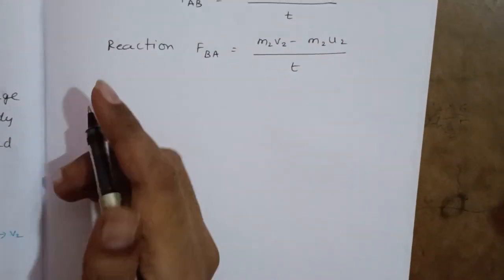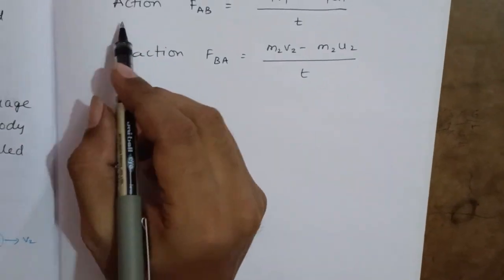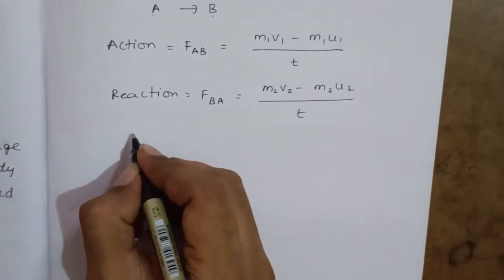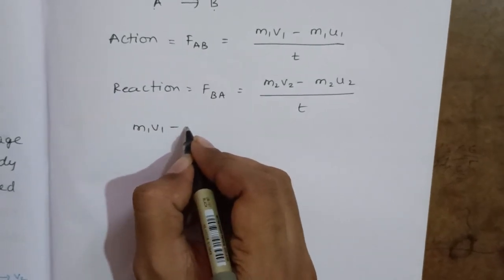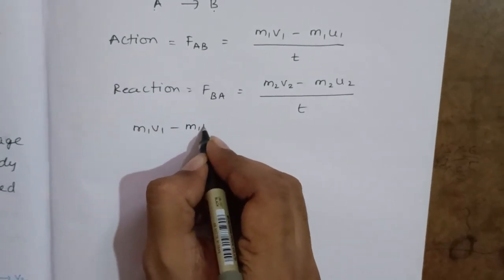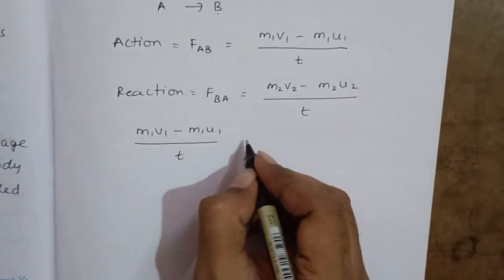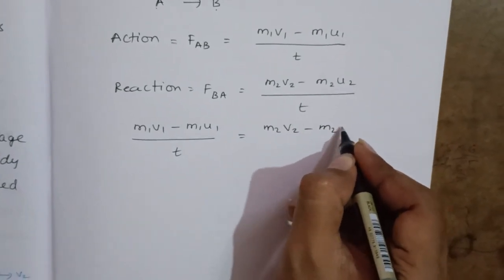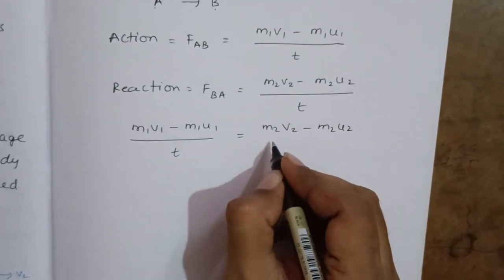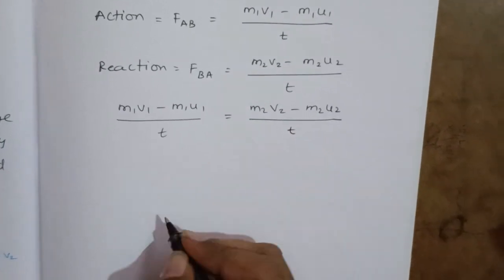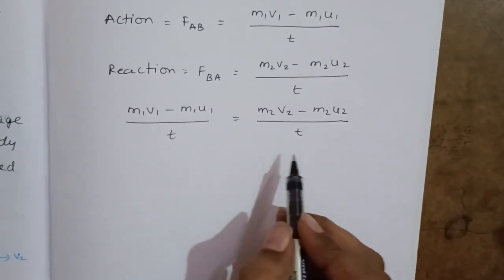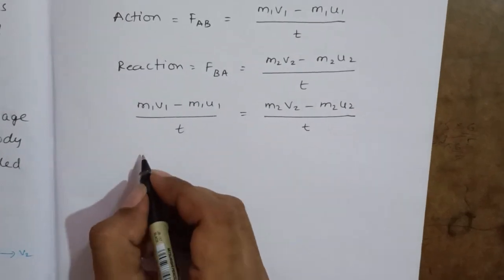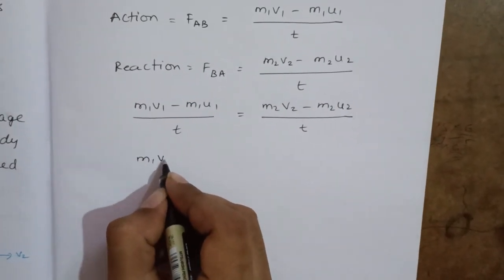Now we equate action equal to opposite reaction. So we can write m1v1 minus m1u1 divided by T equals m2v2 minus m2u2 divided by T. Since both times are equal, T gets cancelled from both sides.